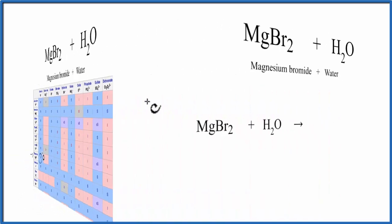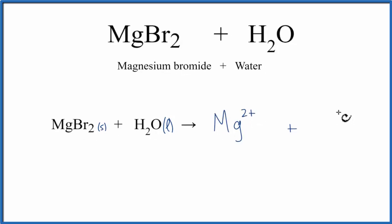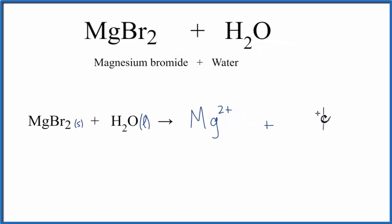So back to our equation. We put solid magnesium bromide in liquid water, and it dissolves. It breaks apart into its ions. We sometimes say dissociates. So we'll get that Mg2 plus, and we'll get the bromide ion, Br minus.